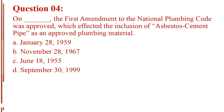Question number 4. On blank, the First Amendment to the National Plumbing Code was approved, which affected the inclusion of asbestos cement pipe as an approved plumbing material. Letter A, January 28, 1959. Letter B, November 28, 1967. Letter C, June 18, 1955. Letter D, September 30, 1999.